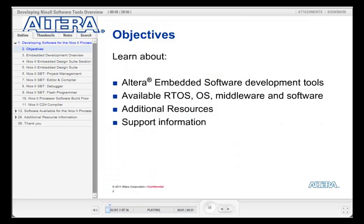In this tutorial, we will cover the NEOS II software development tools that are delivered with the Embedded Design Suite. We will also briefly look at the additional components that can be included with the NEOS II processor and how the software development environment automatically copes with the configurable processor system. Then we will look at commercially available software like operating systems and middleware, and finally discuss where you can get additional information, training, and support.